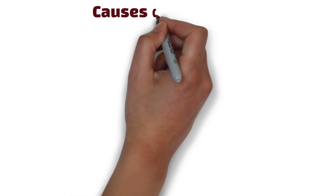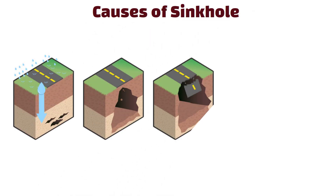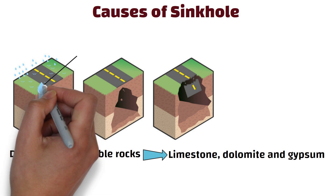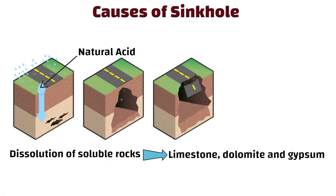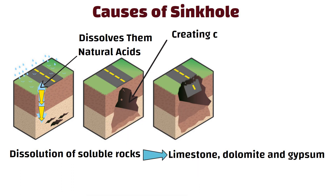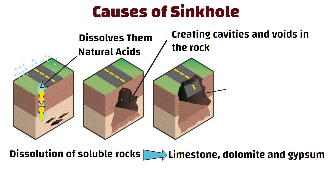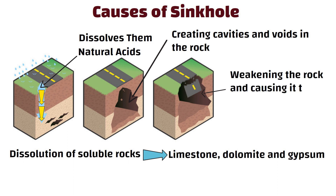Sinkholes are primarily caused by the dissolution of soluble rocks such as limestone, dolomite, and gypsum. Water which contains natural acids seeps into these rocks and dissolves them, creating cavities and voids in the rock. These cavities can grow larger and more numerous over time, weakening the rock and causing it to collapse.